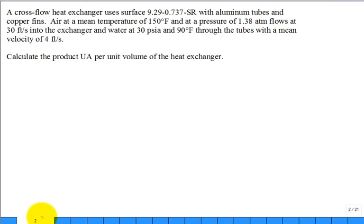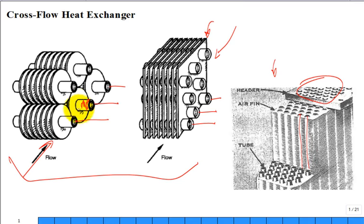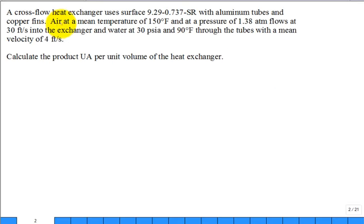We're going to have aluminum tubes and copper fins. Air at a mean temperature of 150°F and pressure 1.38 atm flows at a given velocity. Water at 30 PSIA and 90°F flows through the tubes — so water is inside the tubes, and air flows over the fins connected to the tubes.